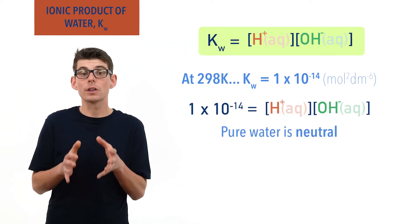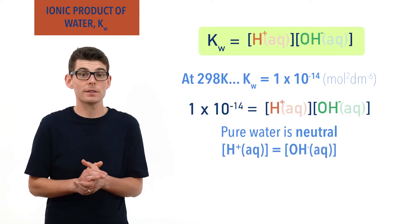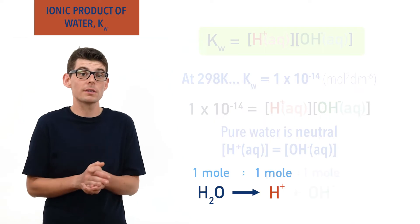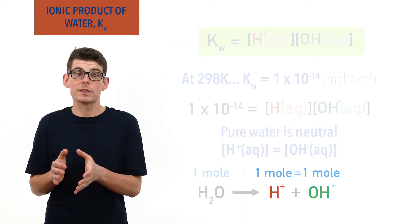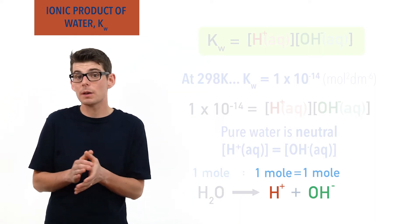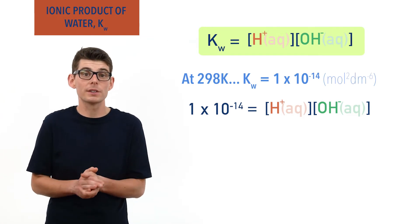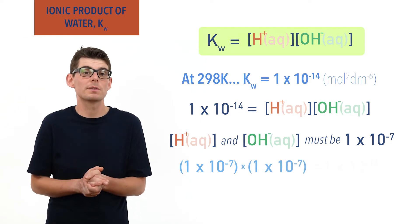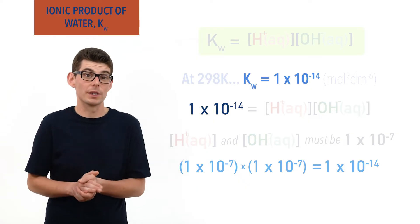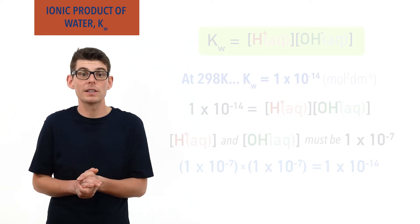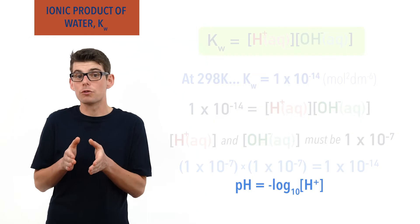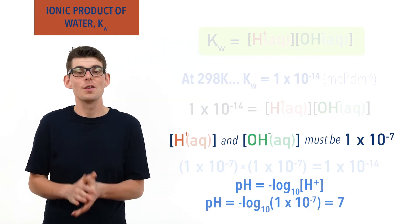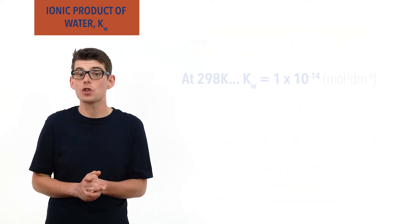Pure water is neutral, meaning concentration of H plus ions is the same as concentration of OH minus ions. This must be the case as every time one molecule of water dissociates, one H plus ion and one OH minus ion is released, meaning the concentrations of both must be the same. If Kw equals 1 times 10 to the minus 14, the concentrations of H plus and OH minus must both be 1 times 10 to the minus 7, as 1×10⁻⁷ times 1×10⁻⁷ equals 1×10⁻¹⁴. This is why neutral water at 298 Kelvin has a pH of 7: pH equals minus log of 1×10⁻⁷, which equals 7. Really important to remember — this is only for a temperature of 298 Kelvin.